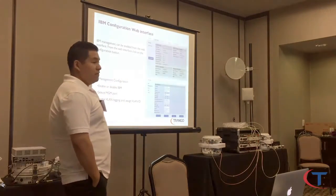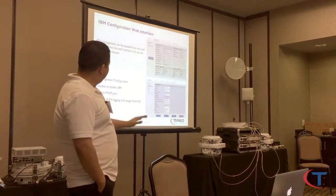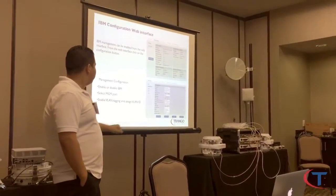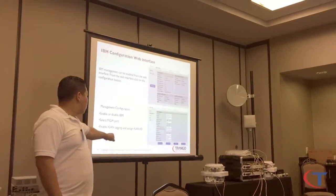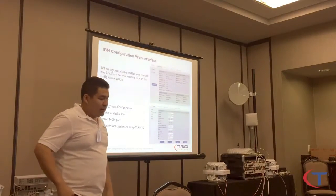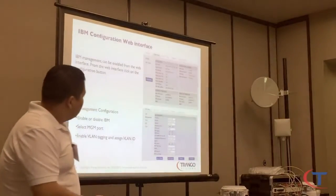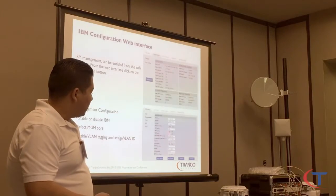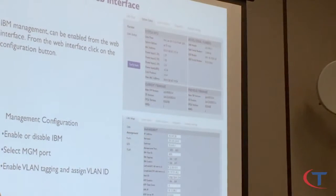IBM configuration through the web interface. IBM management can be enabled from the web interface and from the CLI. Management configuration steps: first, enable or disable IBM; select your management port; enable VLAN tagging; and assign the VLAN IP. Here we have IBM on, but IBM tagging is off. That means IBM is going to work without a VLAN tag.